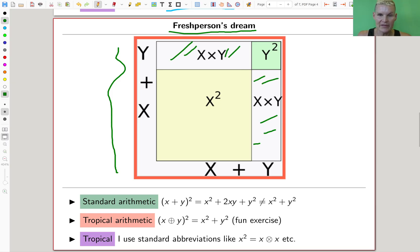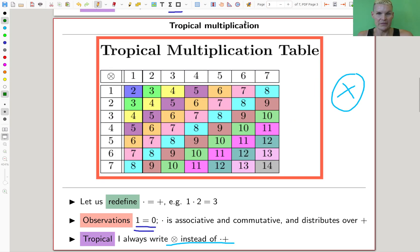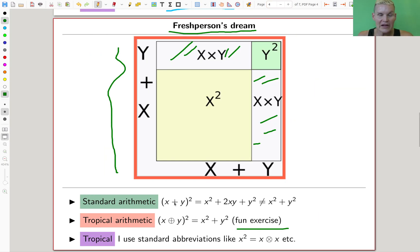Which this picture hopefully convinces you is plain wrong. x² + y² is not (x + y)² - you're missing the cross term here. Anyway, so this, by the way, is a proof without words. So it's clearly not true in classical arithmetic, whatever you want to call it. But in tropical arithmetic, a fun exercise - please do that - you actually see that this one is true.